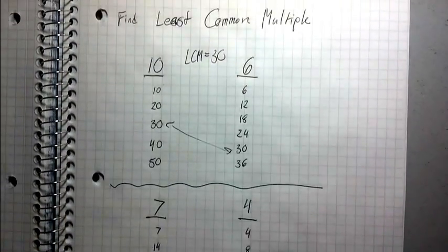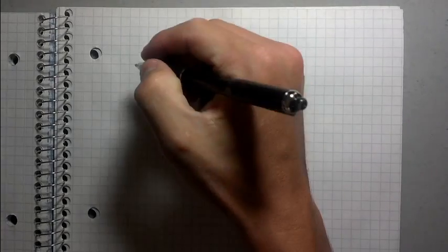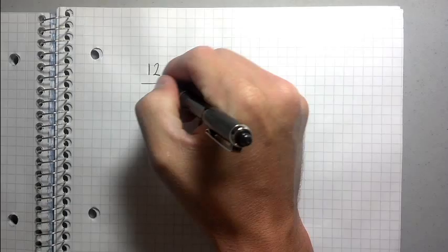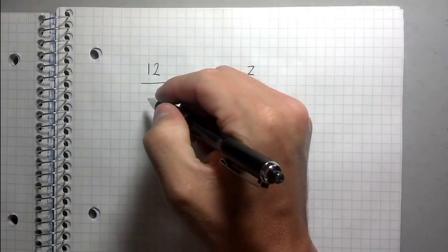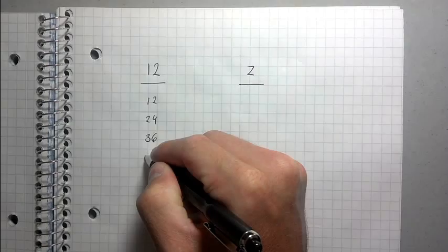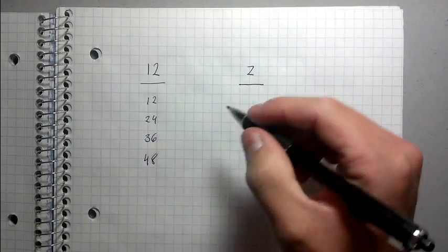And there really is no way to know other than just checking. So the final example I want to show you is one in which you have two numbers like this. You have 12 and 2. Now let's list the multiples of this. We'll do the same thing. What are the multiples of 12? 12, 24, 36, 48, et cetera, et cetera. Okay. How about 2?